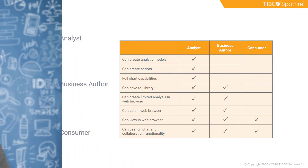To start, let's talk about the different user types. There are three different license types or user types in Spotfire: the analyst, business author, and consumer. This is sometimes called the ABC model. The analyst can create whatever analytic models and scripts they want. They have full chart capabilities, full authoring capabilities, and they work from the desktop client.